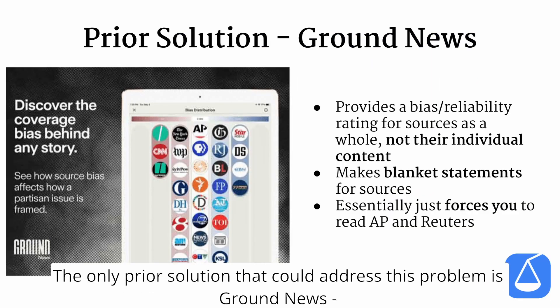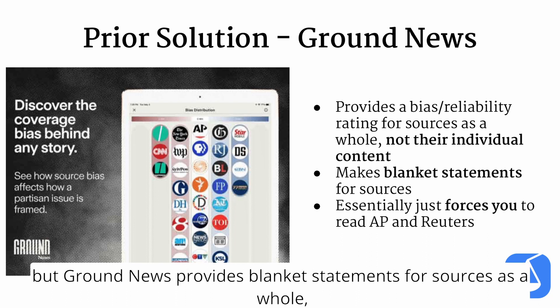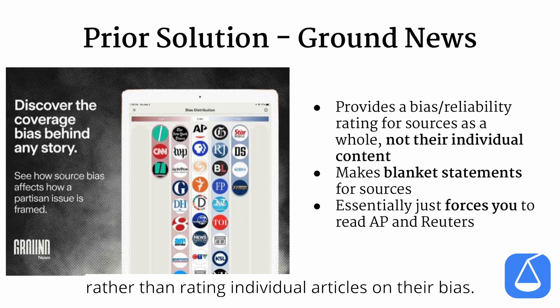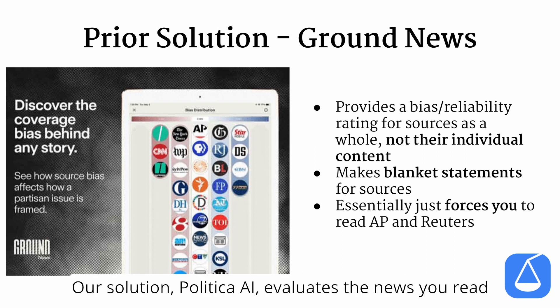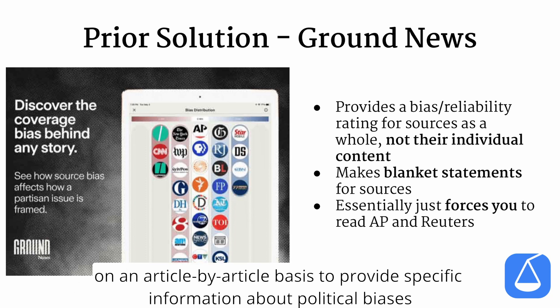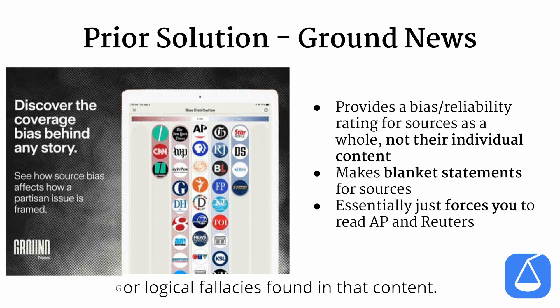The only existing solution that could address this problem is Ground News, but Ground News provides blanket statements for sources as a whole, rather than rating individual articles on their bias. Our solution, Politica AI, evaluates the news you read on an article-by-article basis to provide specific information about political biases or logical fallacies found in that content.